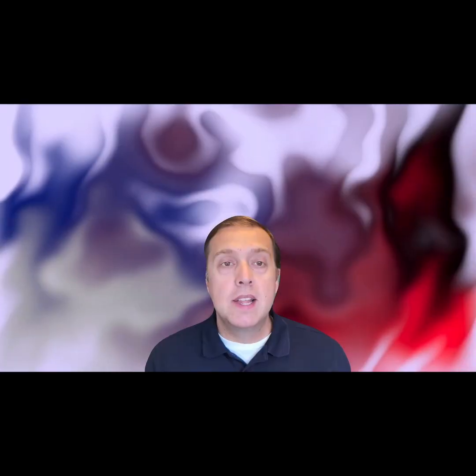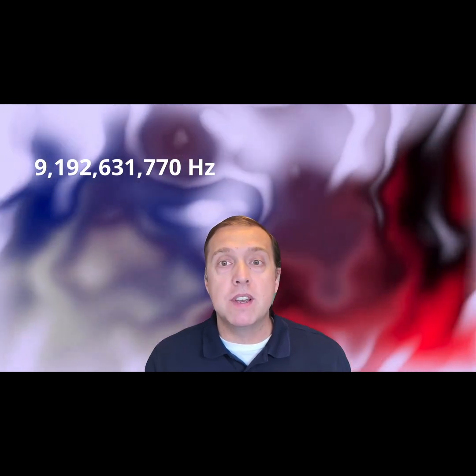The cesium-133 transition energy radiation has a very high frequency of oscillation, which makes it very granular.